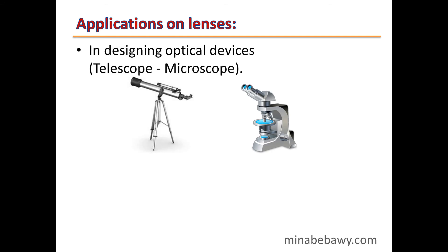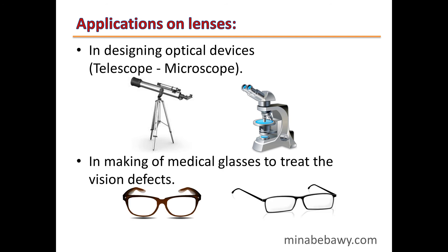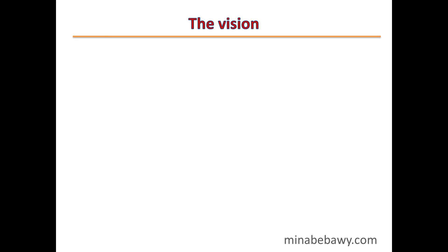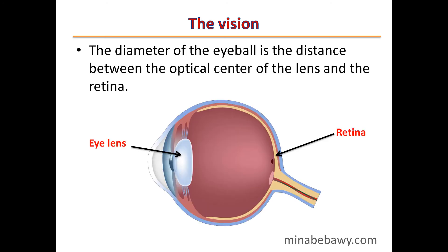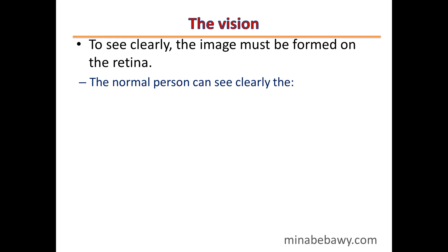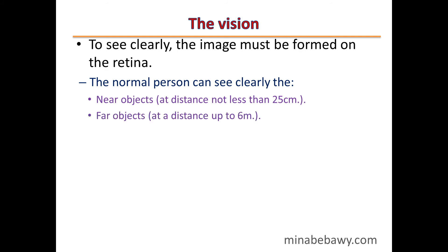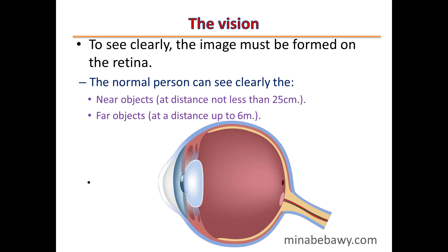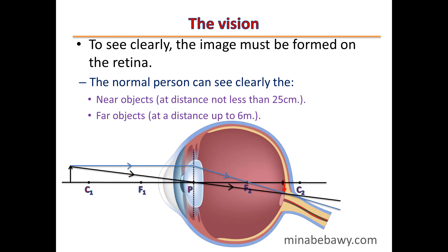Applications of lenses: Lenses are used in designing optical devices such as telescopes and microscopes, and in making medical glasses to treat vision defects. The diameter of the eyeball is the distance between the optical center of the lens and the retina. To see clearly, the image must be formed on the retina. A normal person can see near objects at a distance not less than 25 cm and far objects up to 6 meters. In a normal eye, the image is formed on the retina.